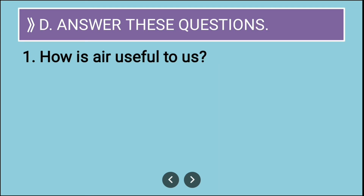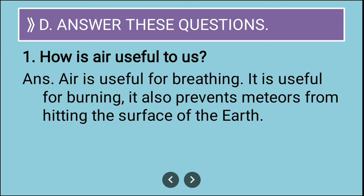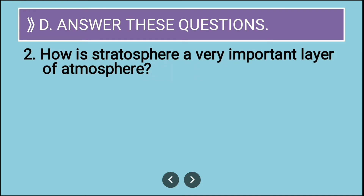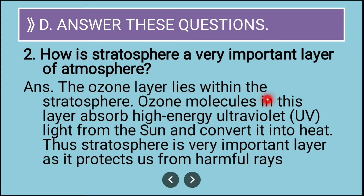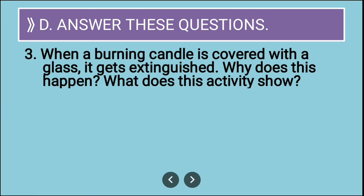Long answer: how is air useful to us? Air is useful for breathing, it is useful for burning, and it also prevents meteors from hitting the surface of earth. Next: how is the stratosphere a very important layer of the atmosphere? The ozone layer lies within the stratosphere. Ozone molecules absorb high-energy ultraviolet radiations from the sun and convert them into heat, thus protecting us from harmful UV rays, which can cause skin cancer.